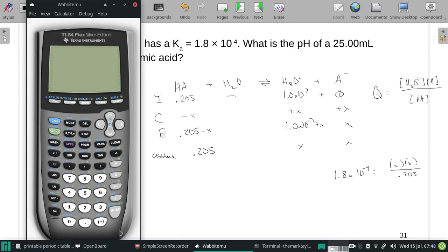1.8 times 10 to the negative fourth times 0.205. Get the square root of that.